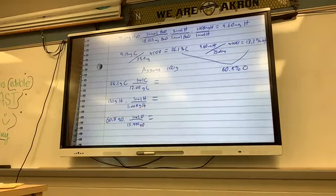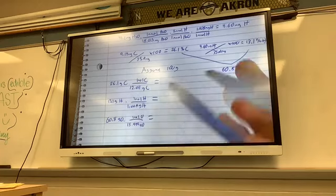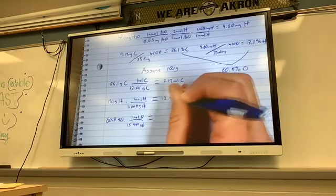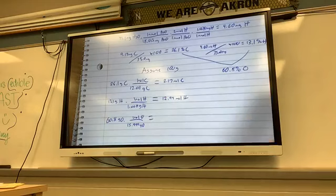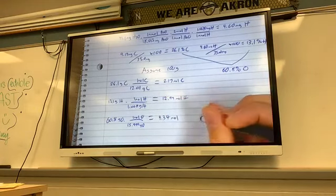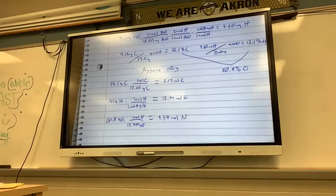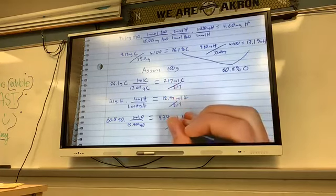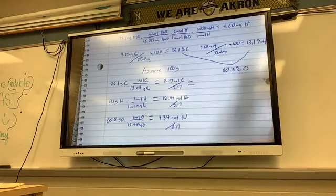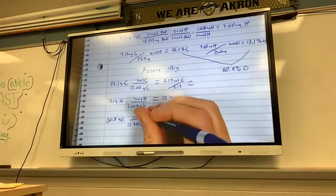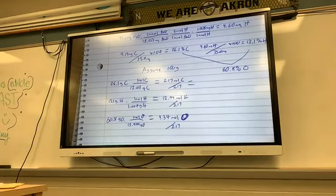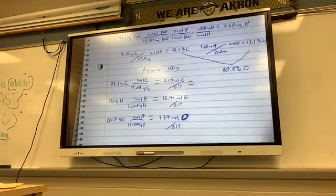You guys have done empirical formulas, right? So divide. This gives me 2.17 moles of carbon. This gave me 12.99 moles of hydrogen. And this one gave me 4.34 moles of nitrogen. Now that I have my three moles, what do I do? Divide by the smallest. So divide by 2.17. What's the carbon going to give me?